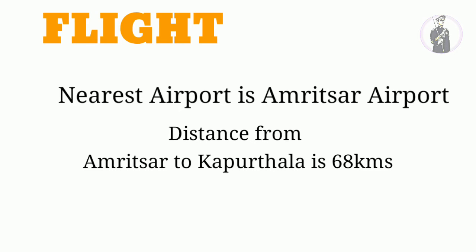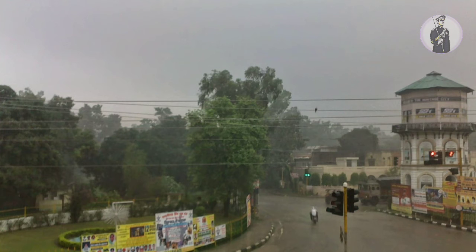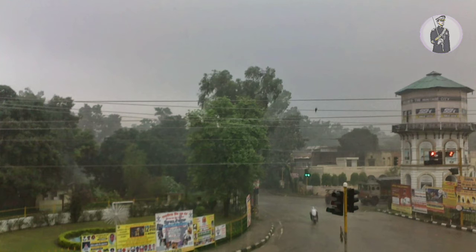Now let us see where to stay in Kapoor Thala. The major landmark is DC Chowk, as shown in the picture. From DC Chowk the selection center is only 100 meters on the right side, and on the front side is the bus stand, around 500 meters away. There are various places to stay: first, a state Gurdwara where you can stay; second, hotels — but hotels are very costly and after COVID the prices have almost doubled, costing around 1500 to 2500 rupees per night.